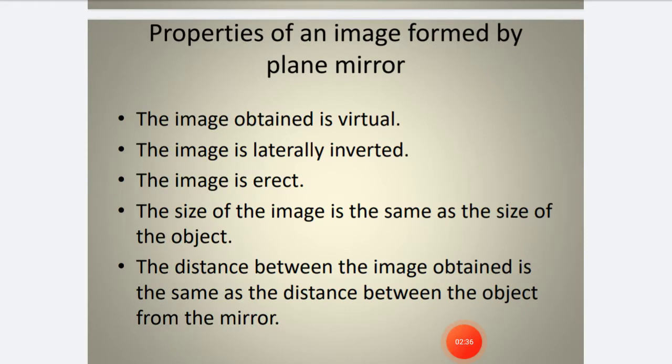Now let's discuss the properties of an image formed by a plane mirror. First, the image obtained is virtual. The image is laterally inverted. Inverted means upside down. The image is erect - erect means straight. The size of the image is the same as the size of the object.